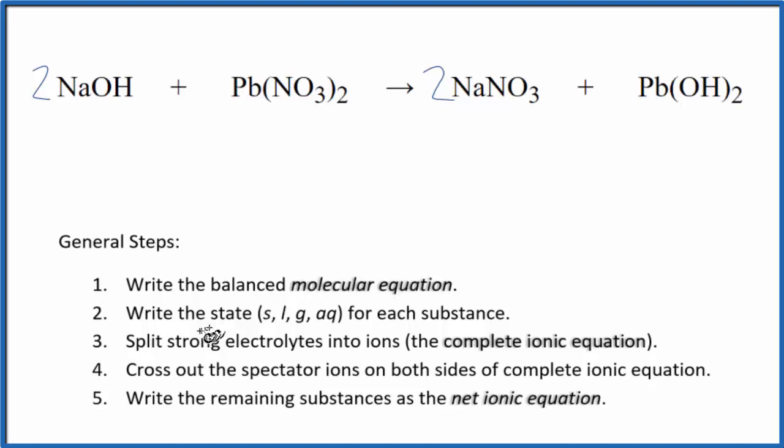Now that we have the molecular equation, we need to write the state for each substance. Sodium hydroxide is a strong base. It's a strong electrolyte. It's going to dissociate into its ions, so we say aqueous. Nitrates are very soluble. Aqueous. We have sodium nitrate, so that'll be aqueous.